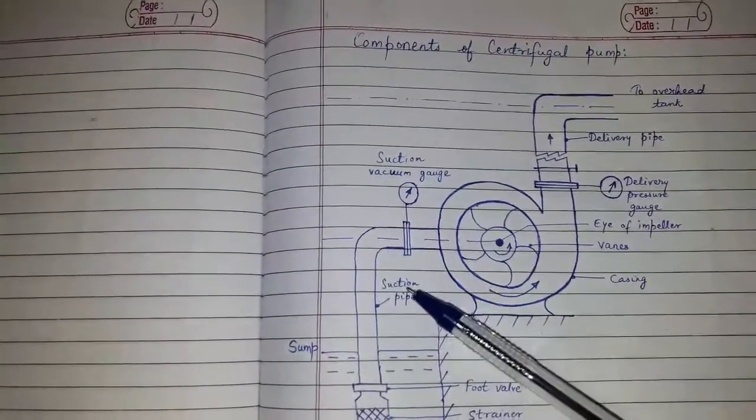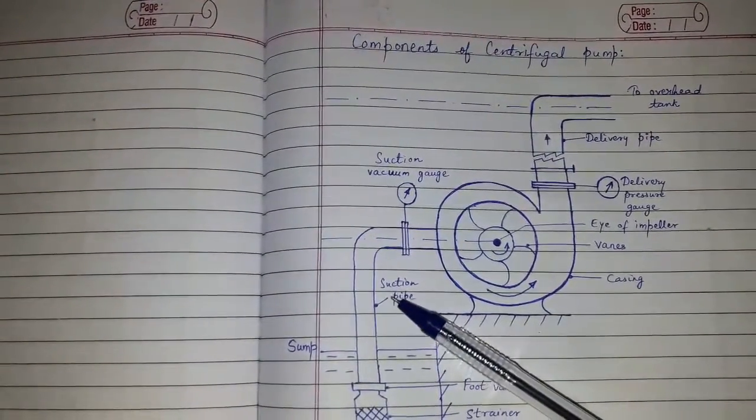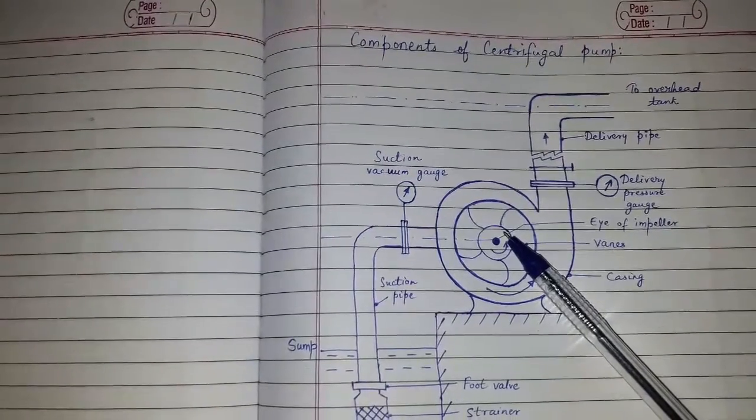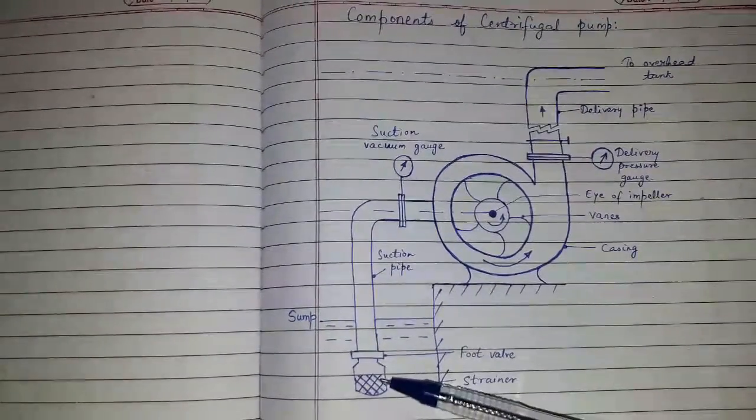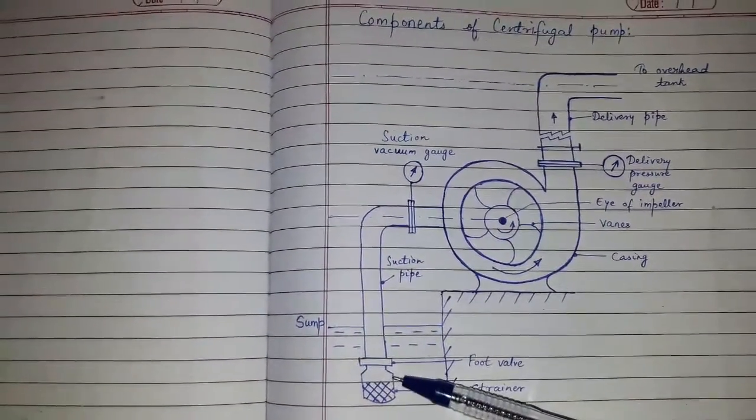Suction pipe: The suction pipe connects to the eye of impeller. The suction pipe has a strainer and foot valve.